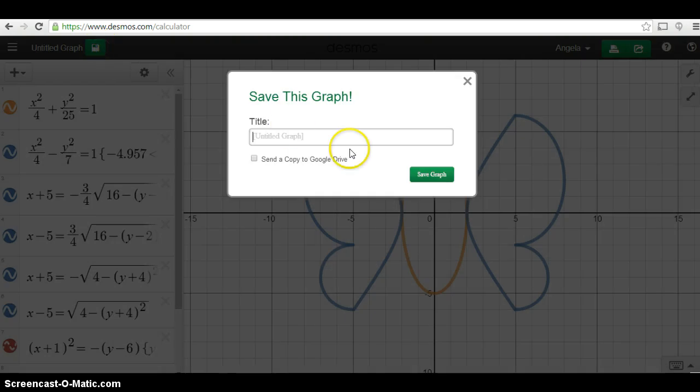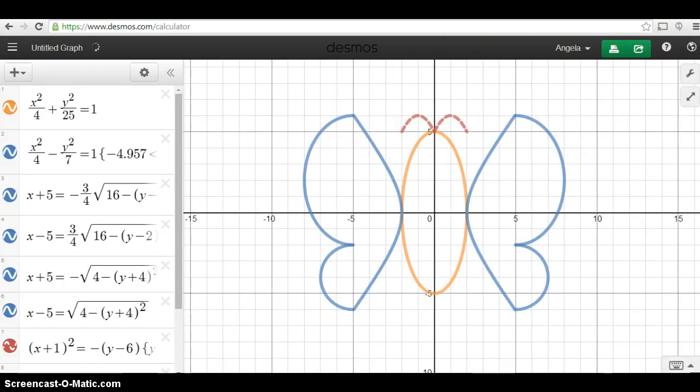So, you can save it here. Save changes. And then, just put a title. Butterfly! And save.